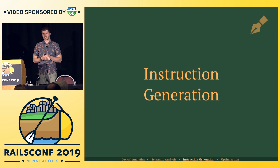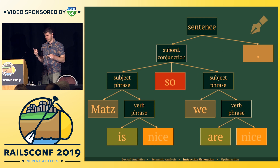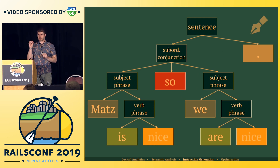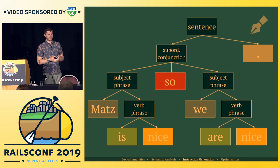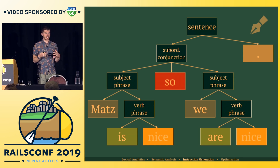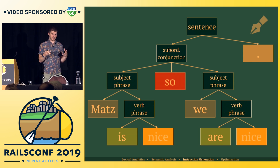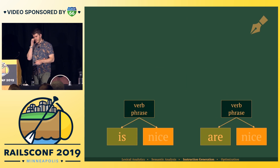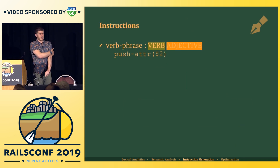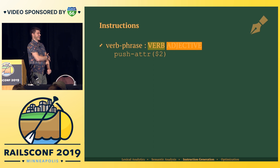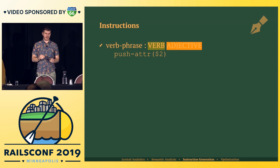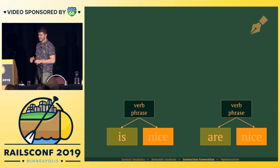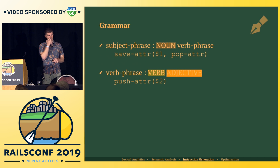We've used our grammar to generate an abstract syntax tree and we need to walk that tree and generate instructions for the virtual machine. We have our tree, and all of the dark blue nodes represent something that we're doing — we are manipulating the state of the virtual machine. If we look at just the verb phrases, what we're really doing is pushing an attribute onto the stack. Dollar sign two is meant to represent the second item of that pattern.